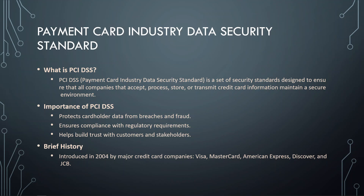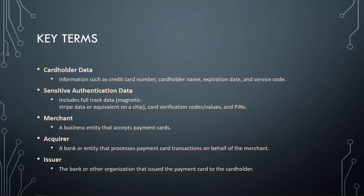Let's understand some key terms used in PCI DSS. The first is cardholder data, which includes information such as credit card numbers, the cardholder's name, expiration date, and service code.